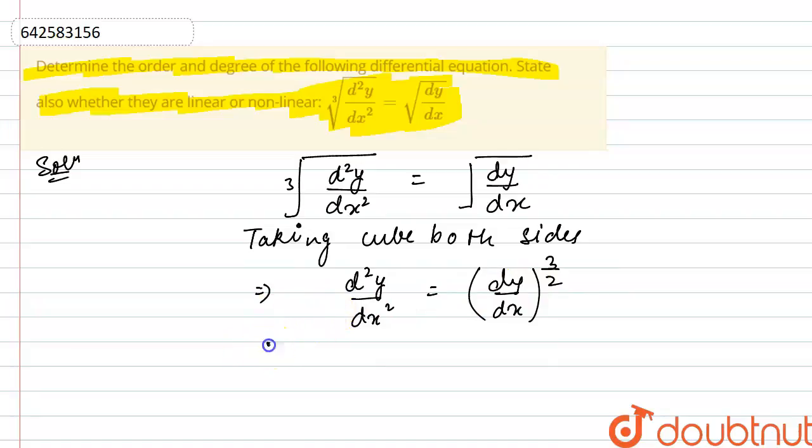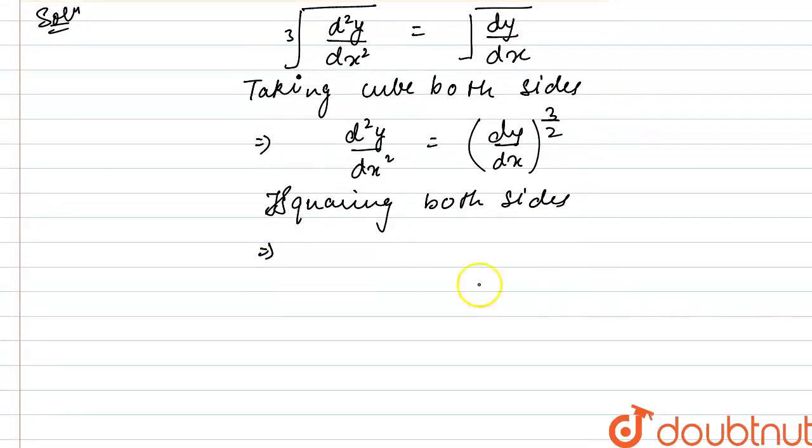Now again take square on both sides. Squaring both sides, what we will get is, this will become d2y by dx square whole square is equals to dy by dx whole cube.